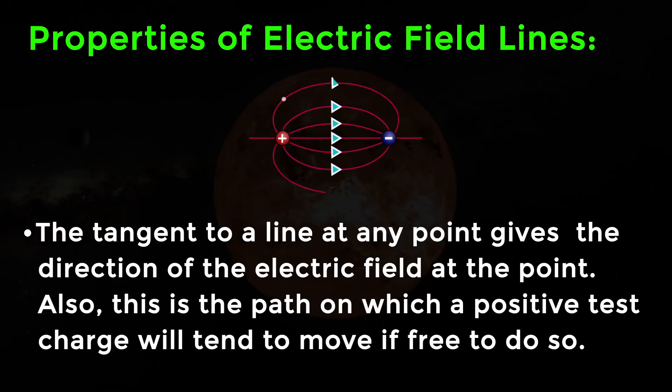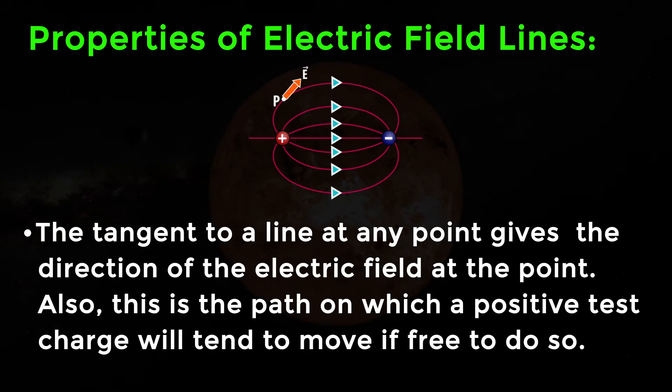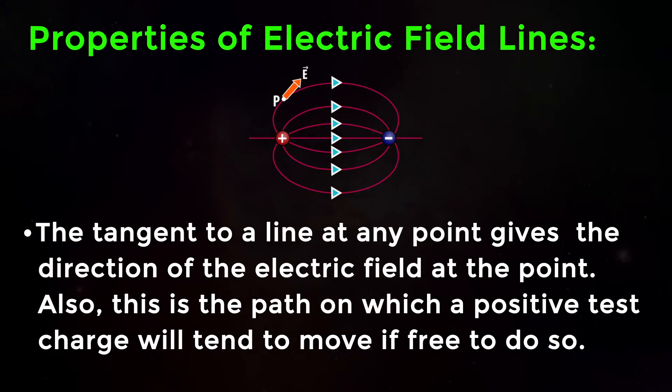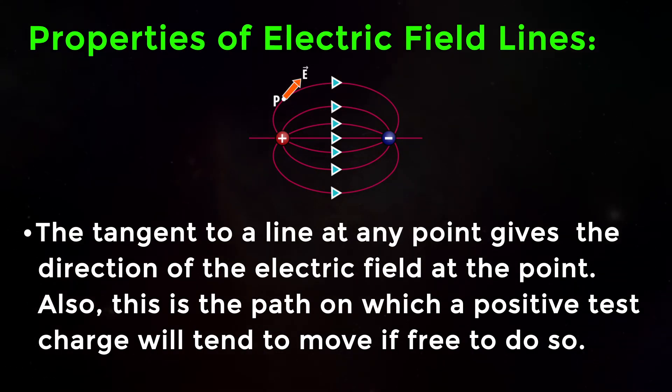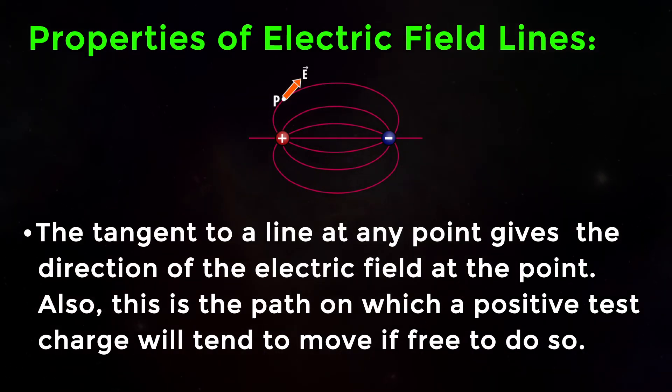The tangent to a line at any point gives the direction of the electric field at that point. Also, this is the path on which a positive test charge will tend to move if free to do so.